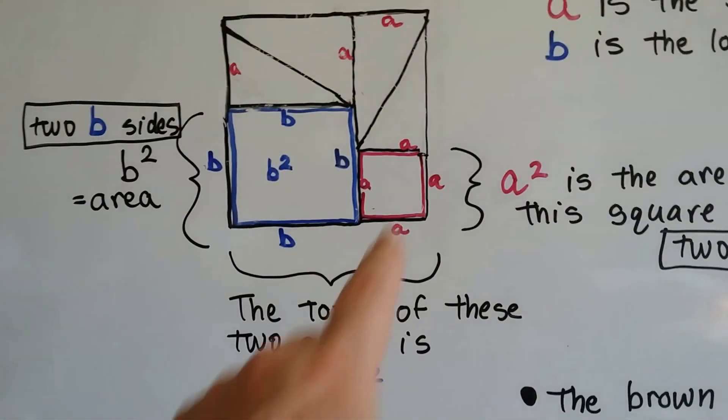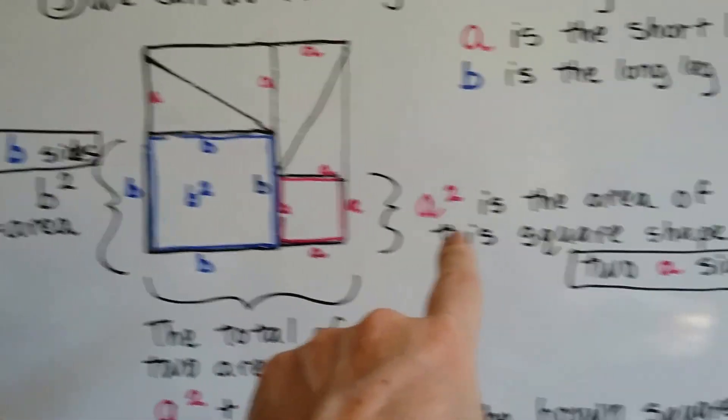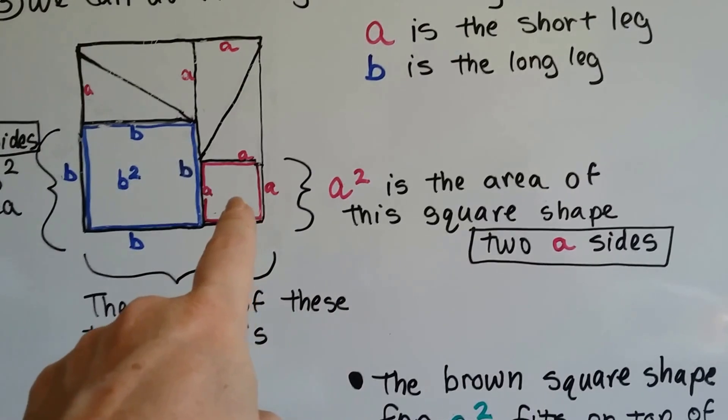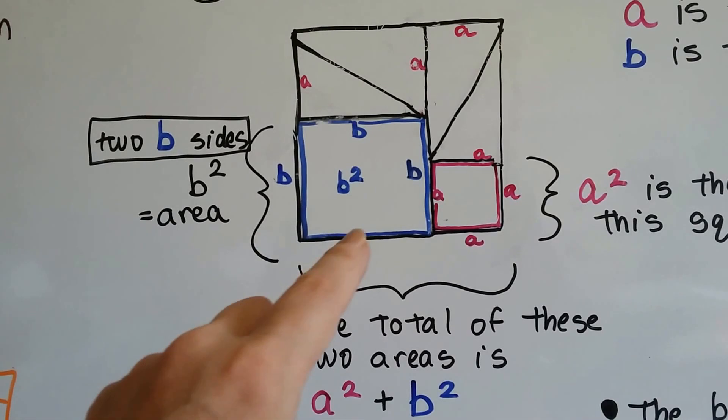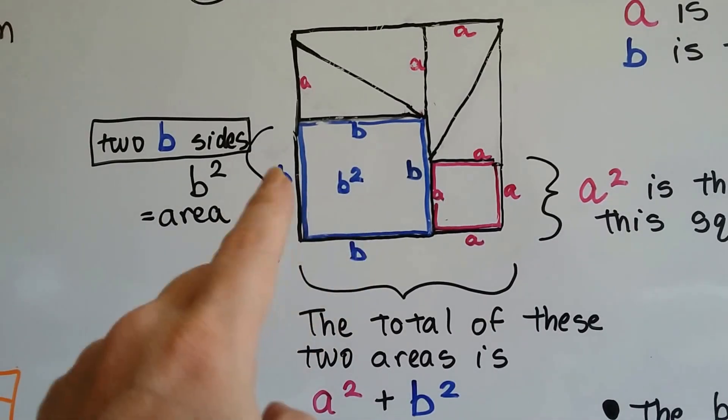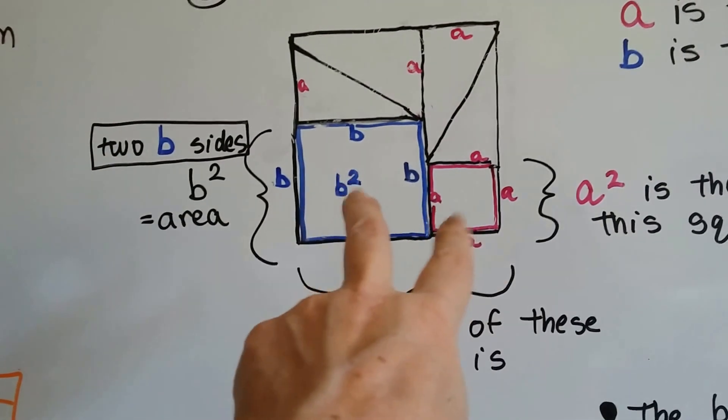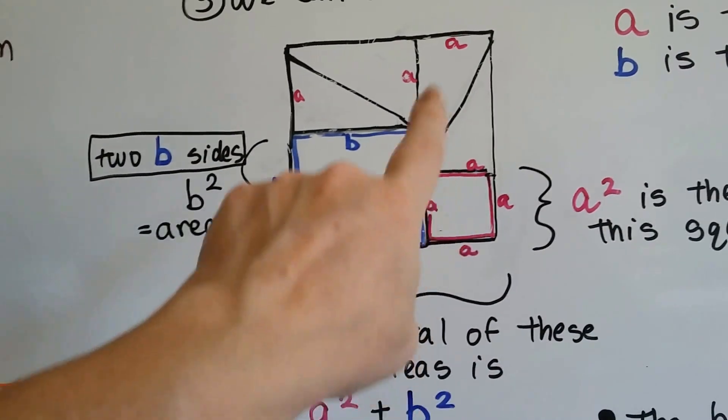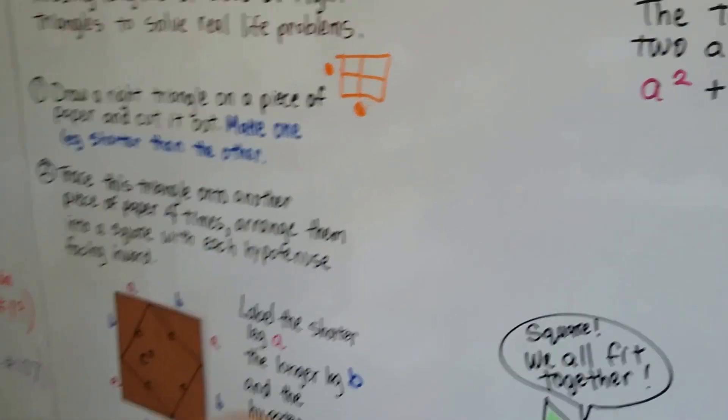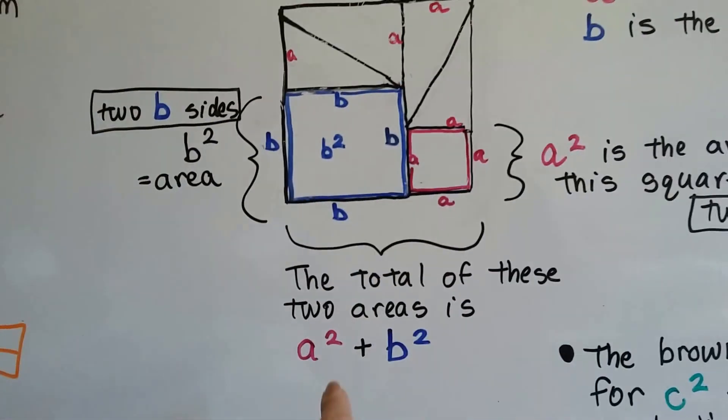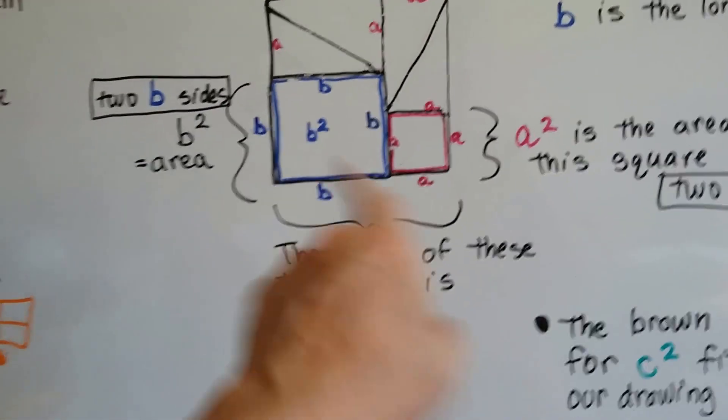What ends up happening is, we have A times A, that's A squared, and that's the area of this square shape. There's two A sides. And there's two B sides, this one and this one. And that makes B squared. So now we've taken up the area of these two. The total of these two areas are A squared plus B squared.